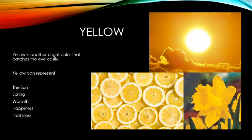Yellow is another bright, eye-catching color. It can represent the sun, spring, warmth, happiness, and freshness. We see a lot of yellow in springtime — it's the color of early flowers like daffodils and forsythia — and it's also associated with citrus freshness.